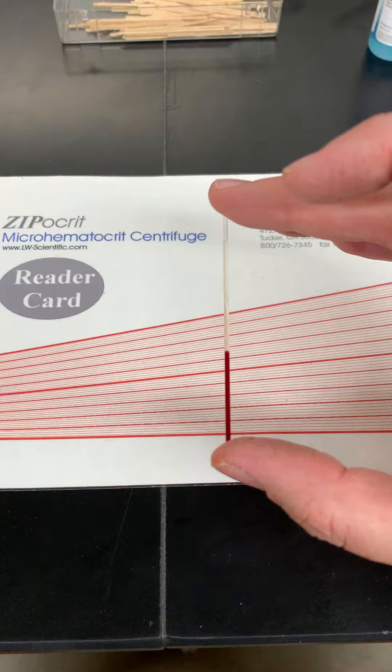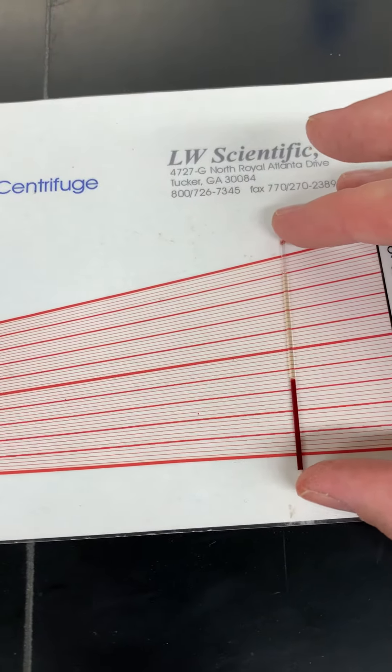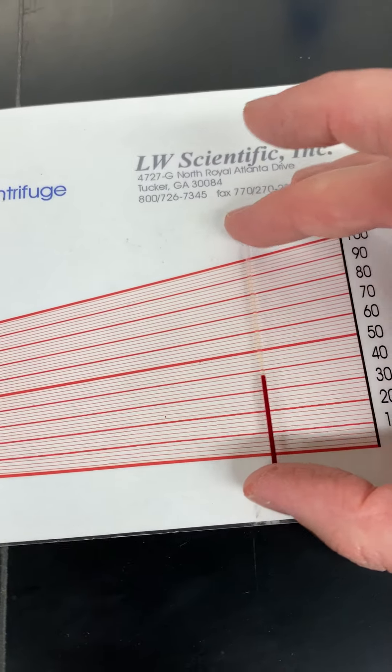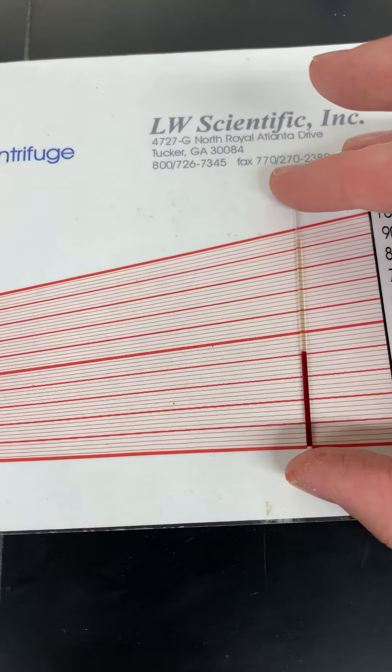You're gonna take this and line up the bottom of the red blood cells with the zero mark and the top of the plasma with the 100 mark, and then read where the red blood cells end. And this is easier said than done while you're talking and holding a camera.